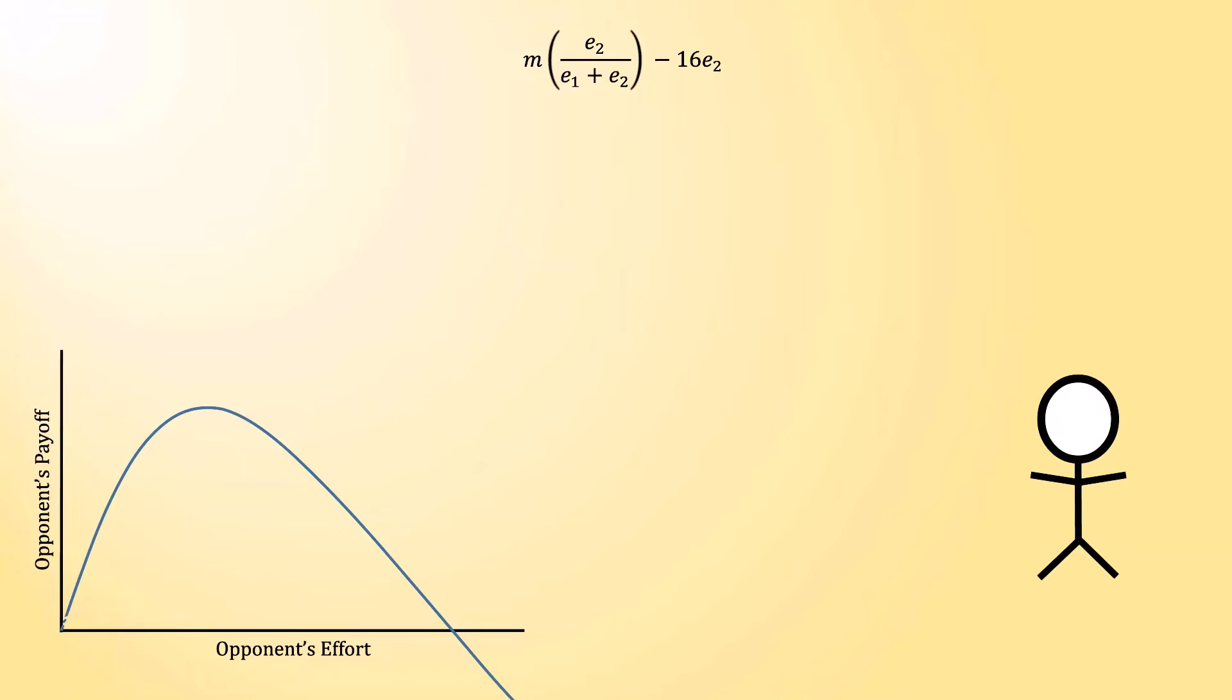Perhaps surprisingly, this graph is helpful for deriving your opponent's optimal effort. They want to choose whatever effort level maximizes the function. You'll notice that if you draw a tangent line across the graph where the function is maximized, that tangent line is flat. Thus, if you know a little bit about derivatives, you can figure out what the effort level is that maximizes the function.